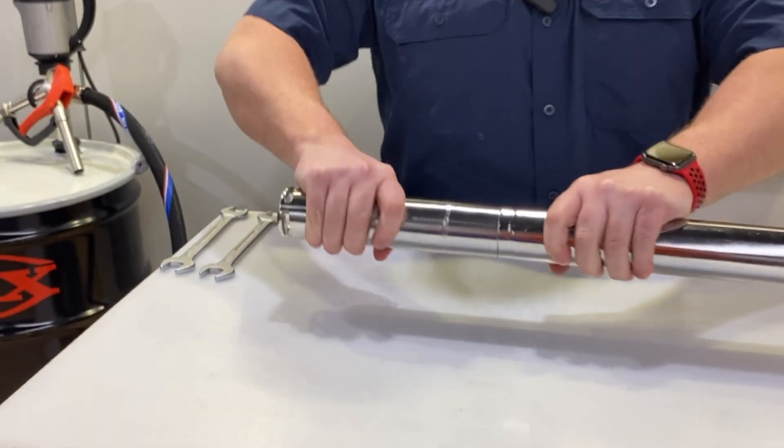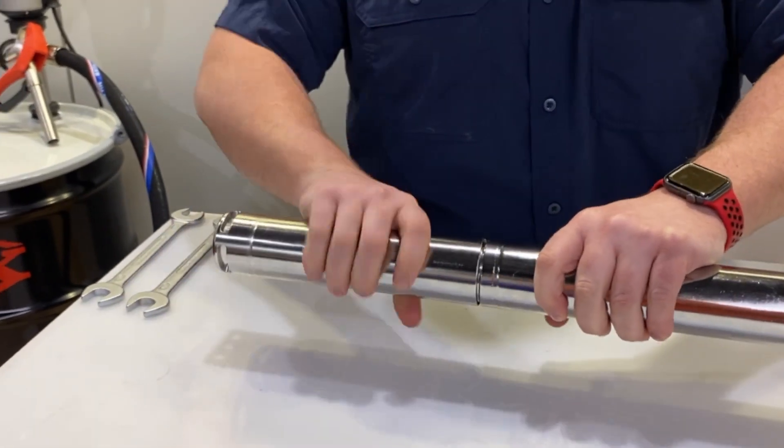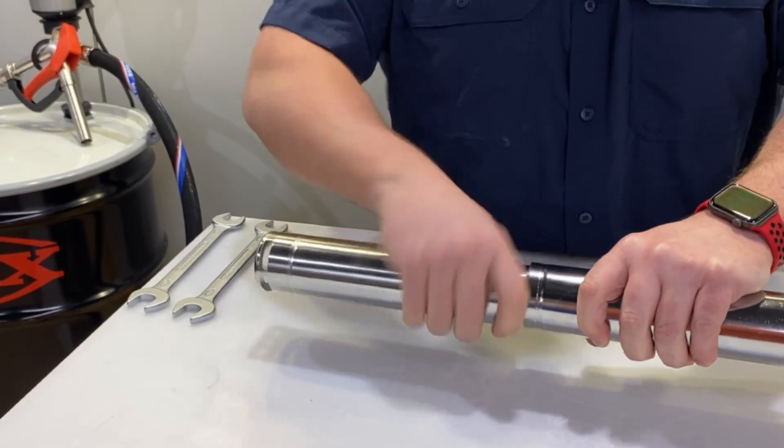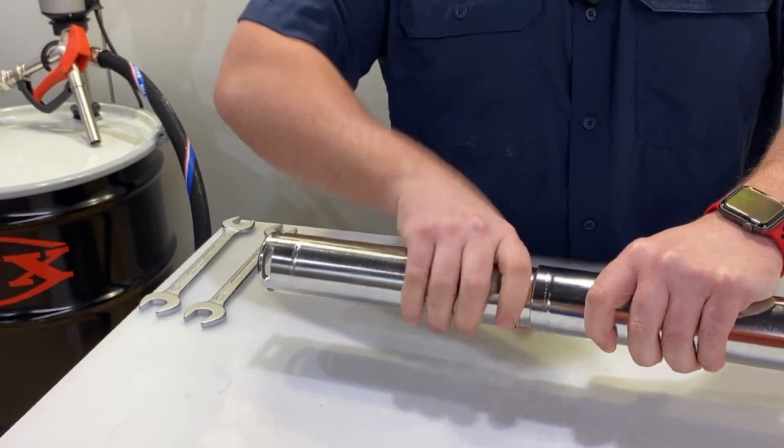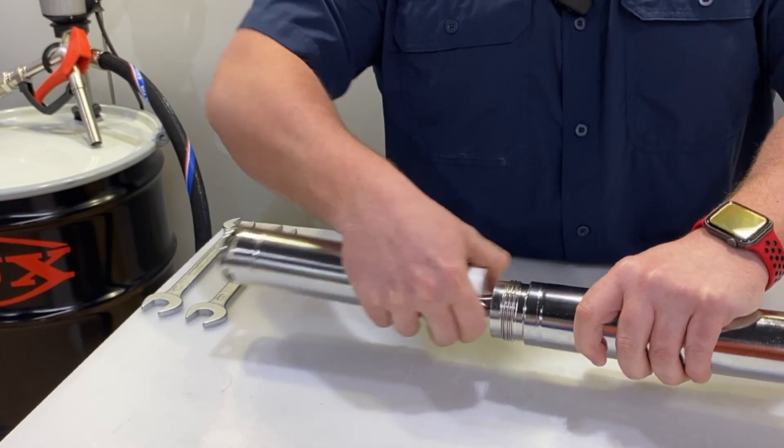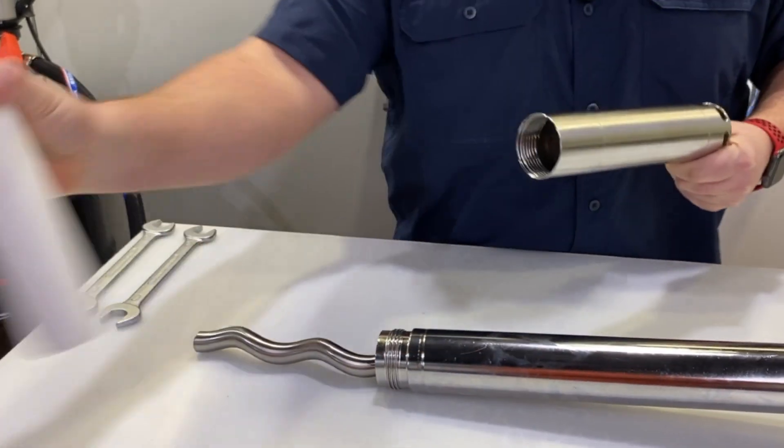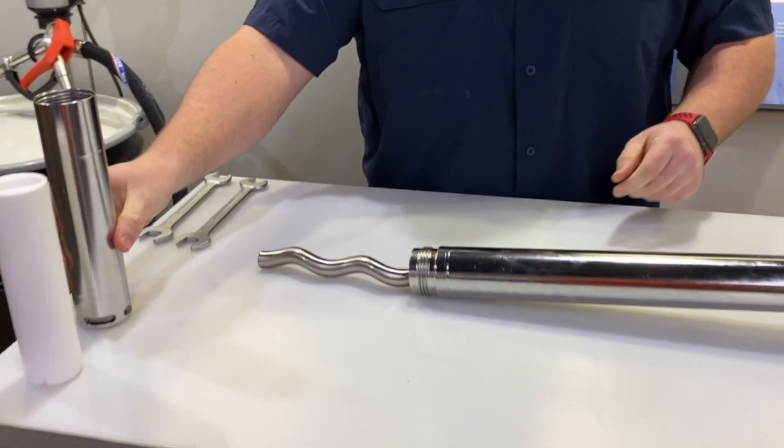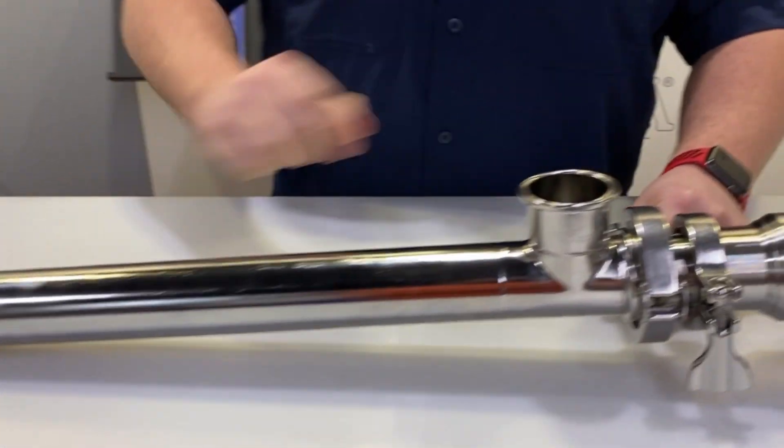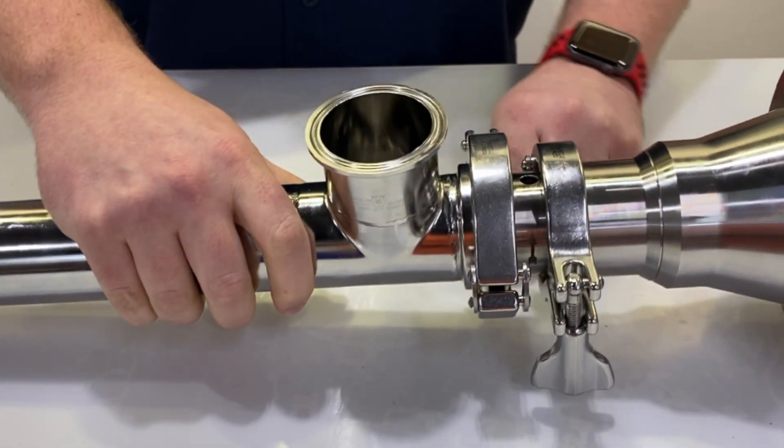For disassembly, you'll start down here at the stator housing. This is a reverse thread. Along with the housing, you'll get the PTFE stator, and then you'll come back up here and remove the larger of the two tri-clamps.